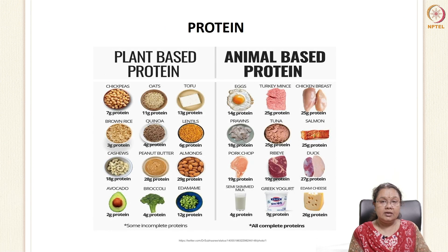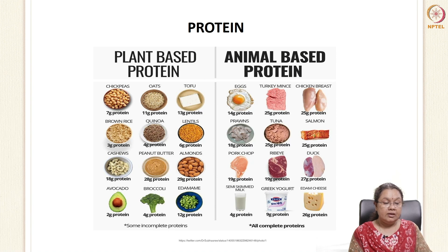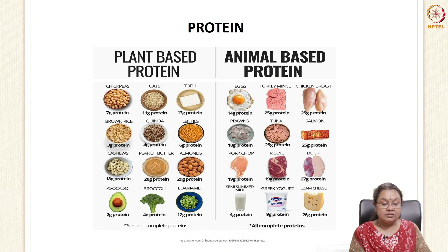Protein is the second most important component. We have plant-based protein and animal-based protein. Different pulses are rich in protein, and soya and avocado are examples of plant proteins. Animal-based proteins include chicken, egg, all animal meats, cheese, and dairy products. Animal-based proteins are considered complete proteins because they contain all the essential amino acids.